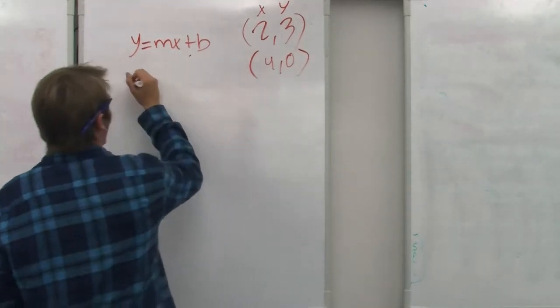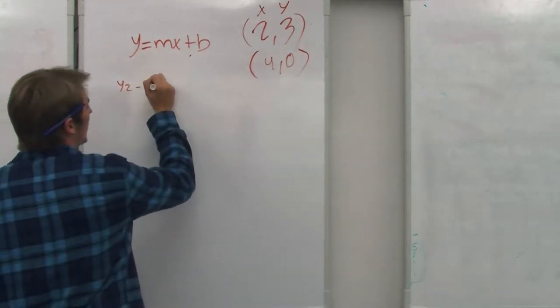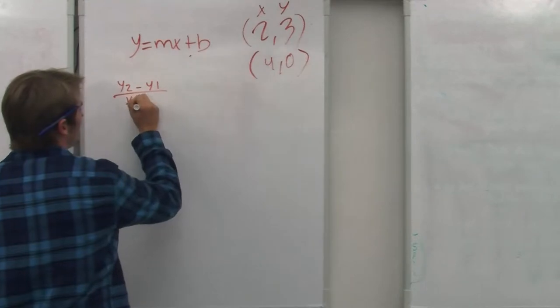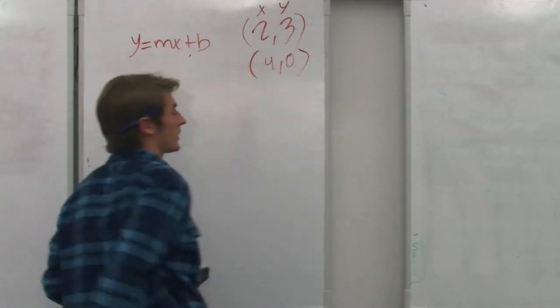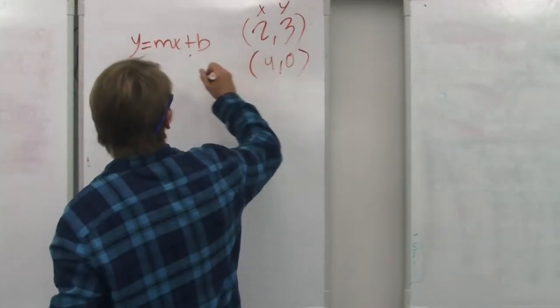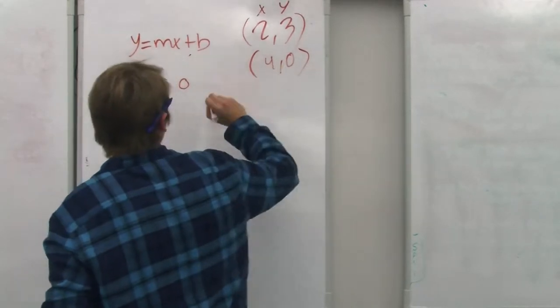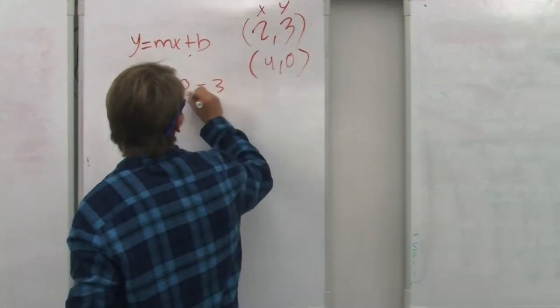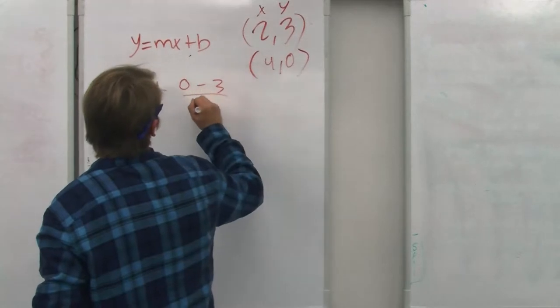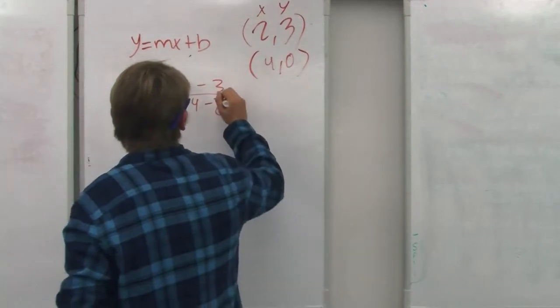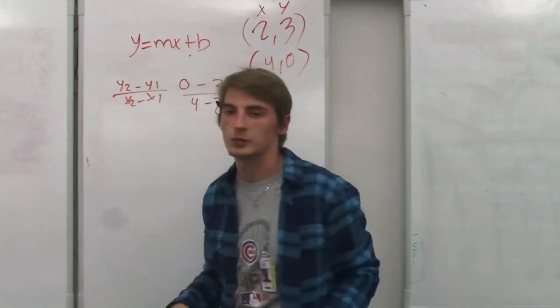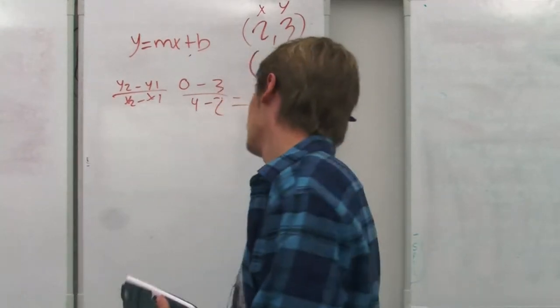We're going to go y2 minus y1 over x2 minus x1. So, y2 would be 0 minus 3 over 4 minus 2. The slope would be negative 3 halves.